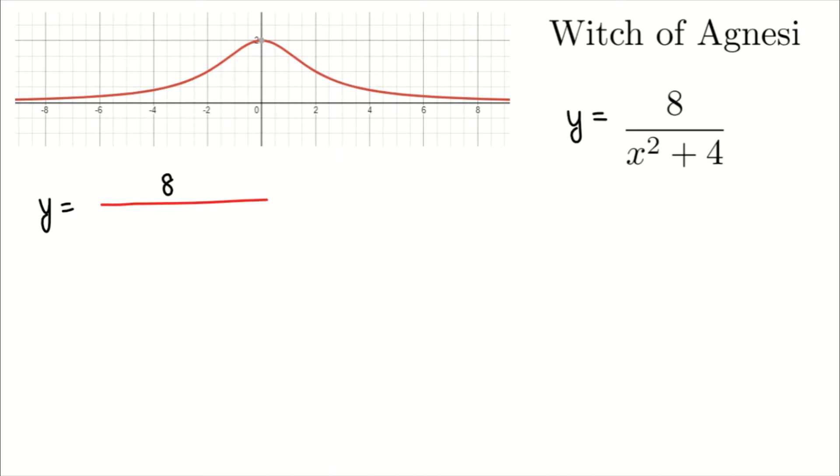So you have 8 being divided by x squared plus 4, this entire thing in the denominator. So x squared plus 4.